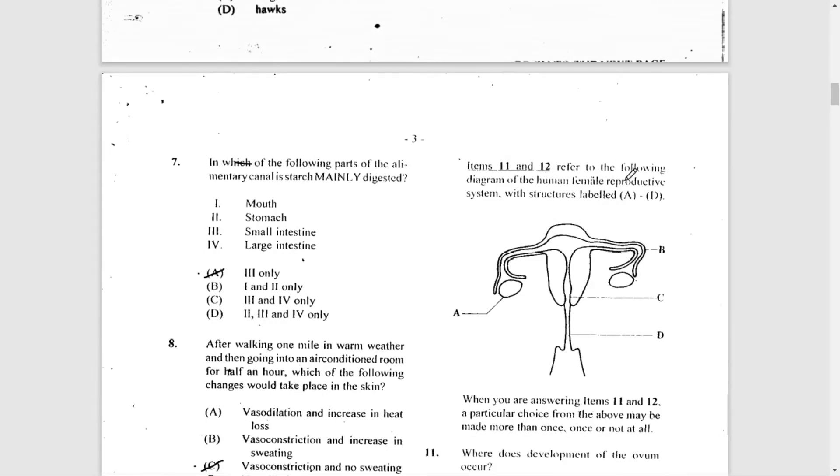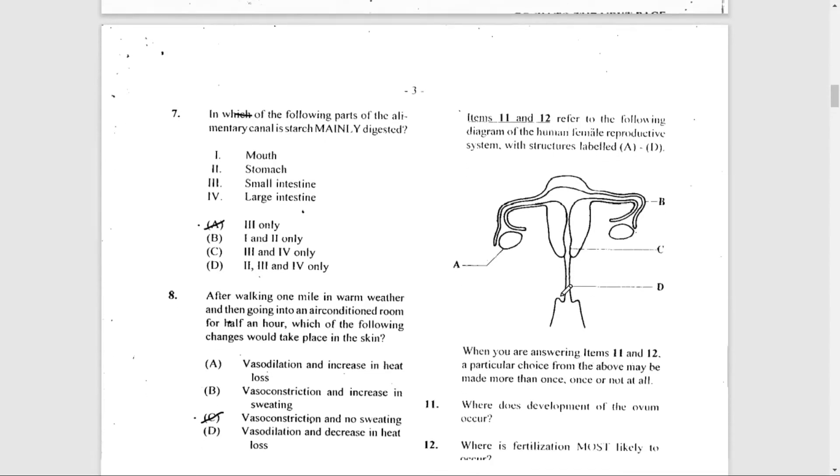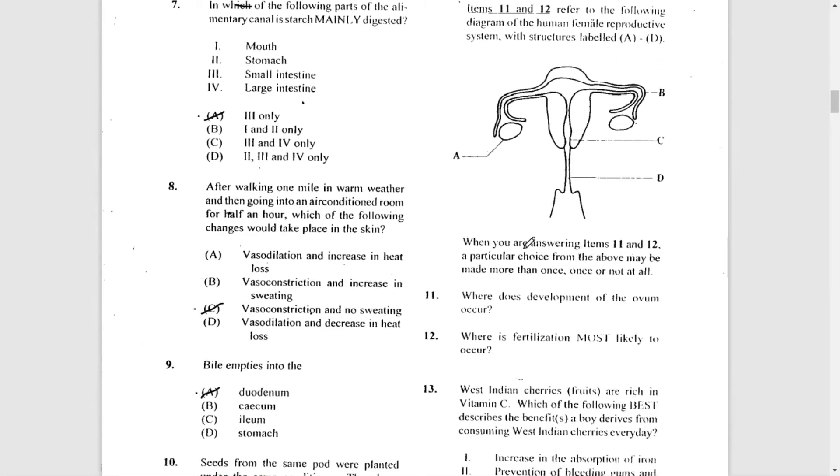Items 11 and 12 refer to the following diagram of a human female reproductive system with labeled structures A to D. When you are answering items 11 and 12, a particular choice from the above may be used more than once, once, or not at all.